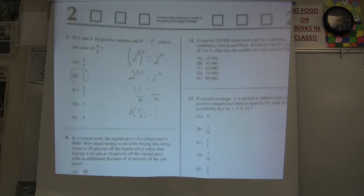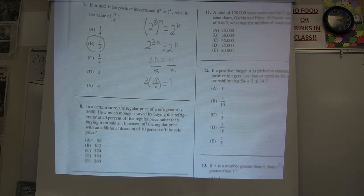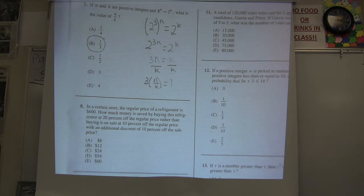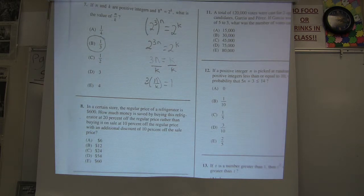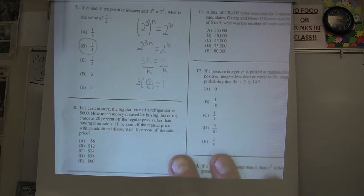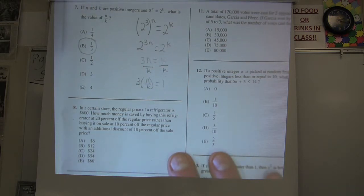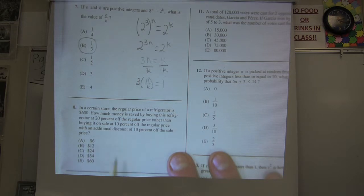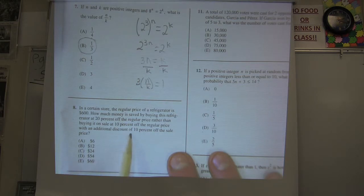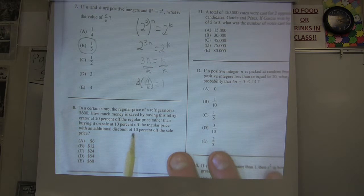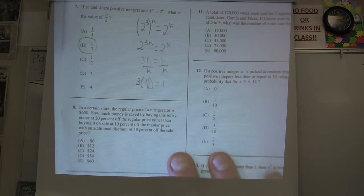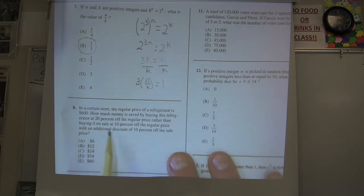Number 8. In a certain store, the regular price of a refrigerator is $600. How much money is saved by buying this refrigerator at 20% off the regular price rather than buying it on a sale at 10% off the regular price with an additional discount at 10% off the regular price? A lot in here. Let's get this sale one first.